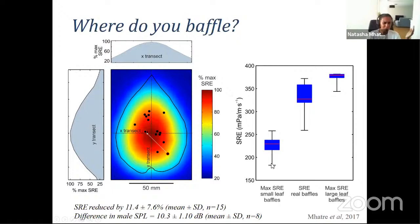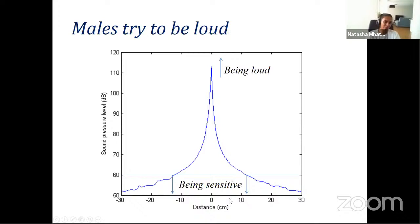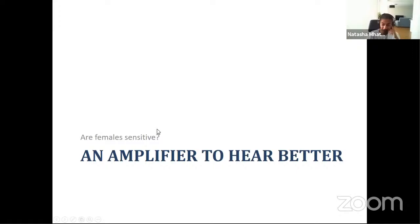So yes — the males are definitely trying to be loud. They're trying their very best to be as loud as possible. Now I switch to the second part of my talk and ask: are the females cooperating with them, or are they making the males work as hard as possible? Are the females sensitive to sound? What we knew about crickets before this work was that their ears use resonance — in the same way that wings use resonance to produce sound, ears use resonance to sense sound.